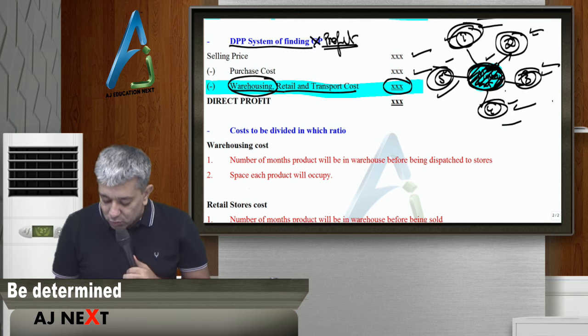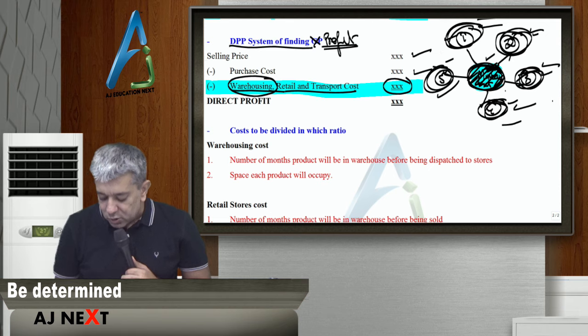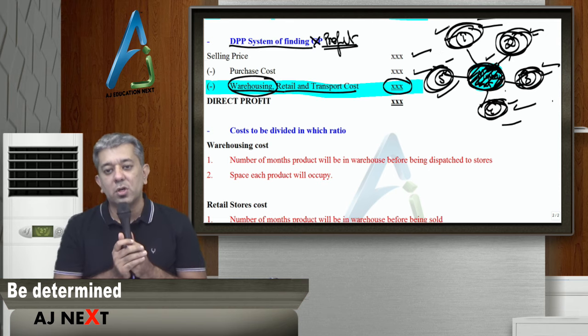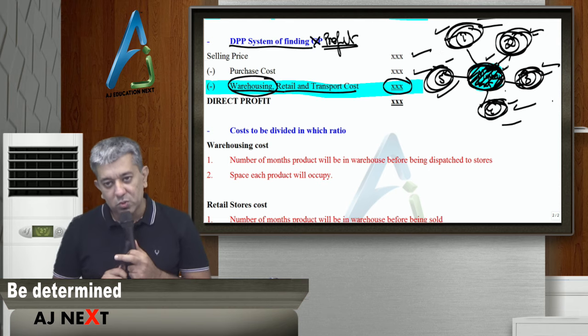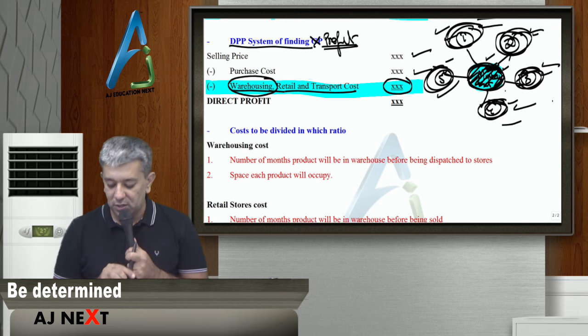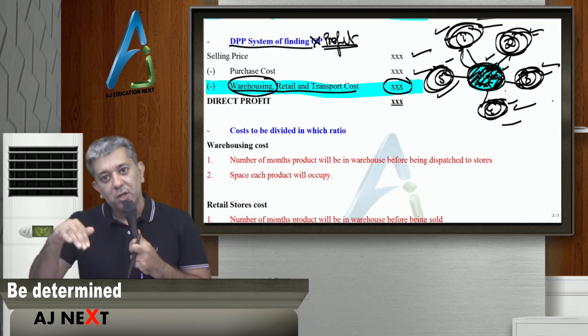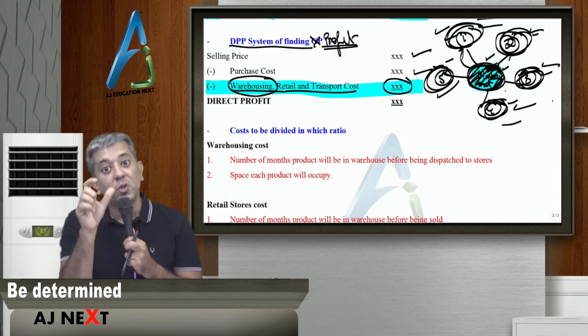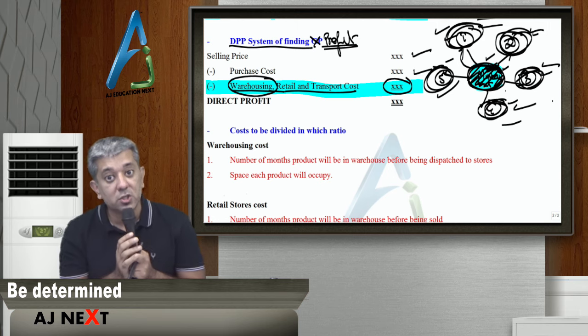Jab bhi koi stores, main isko stores bolta hu, toh mere paas paanch stores hai. Store number one ka, koi ek product ka stock khatam ho raha tha. Usne central warehouse ko bola, ki bhai mujhe ko thousand units aur bhejo. Toh yaha se, isne apna van bheja, goods transport karne ke liye. Woh bhi toh ek, tumhara cost hai, woh bhi toh charge hona chahiye.